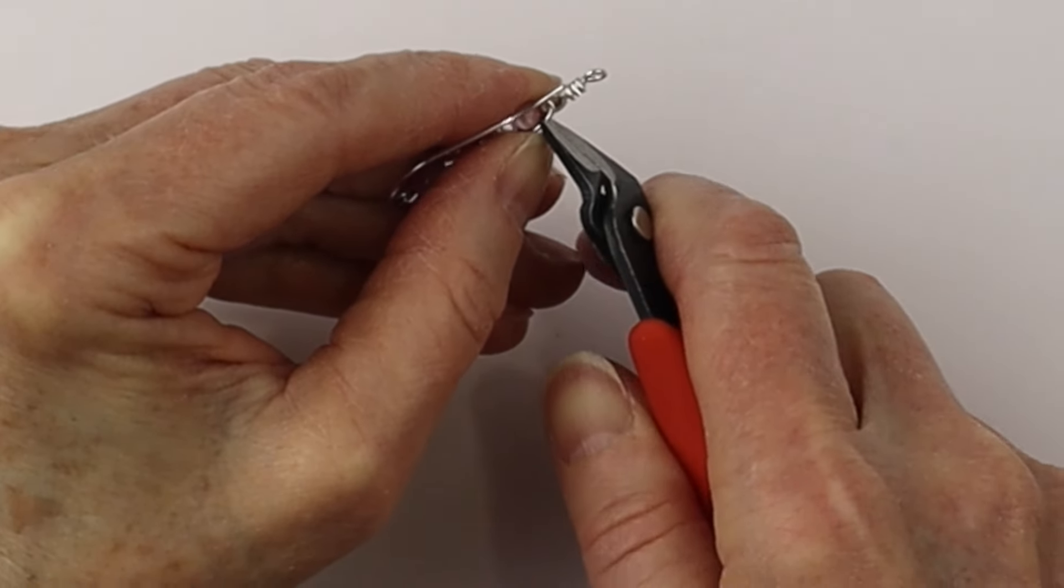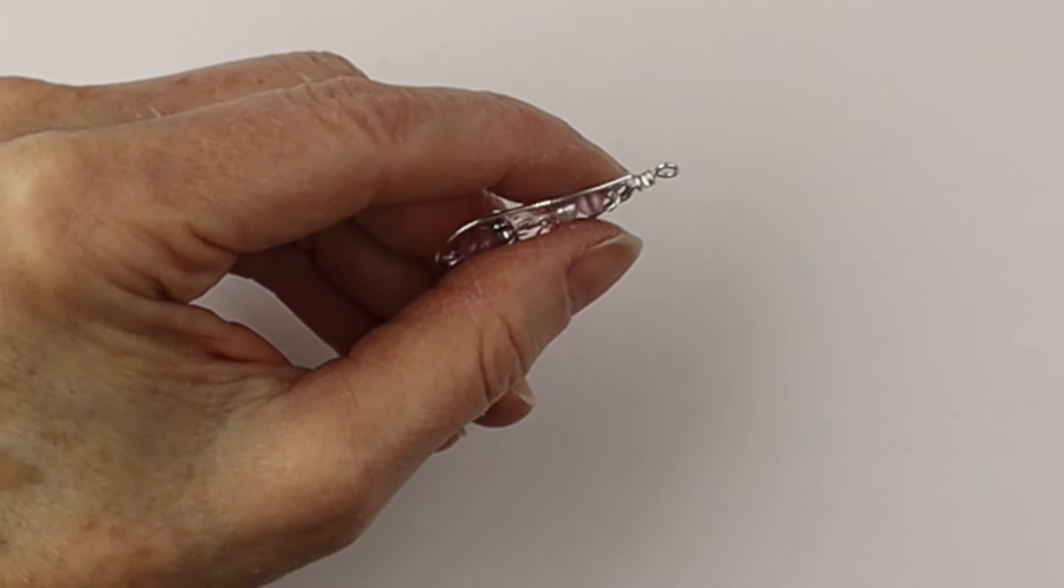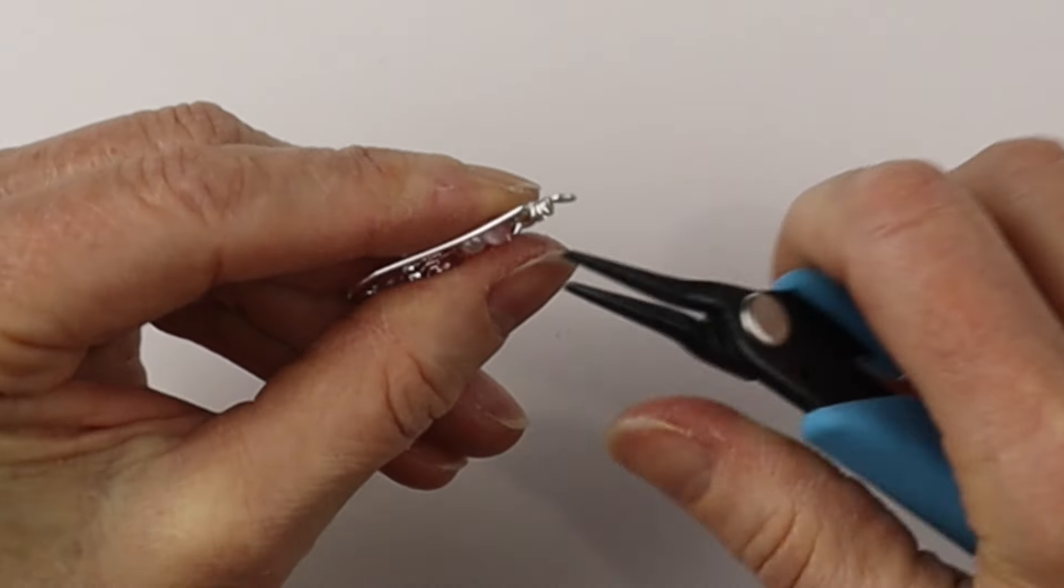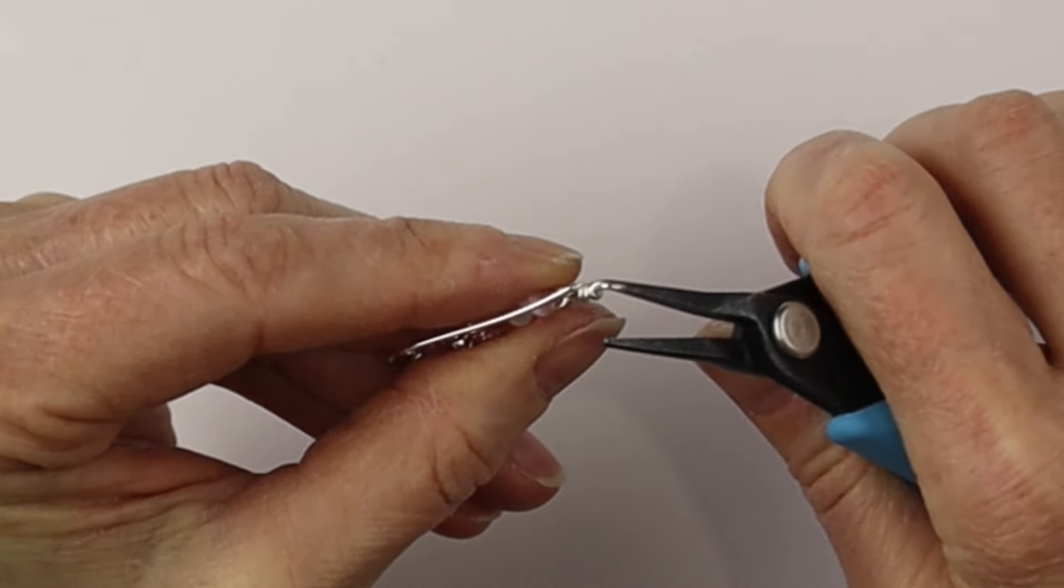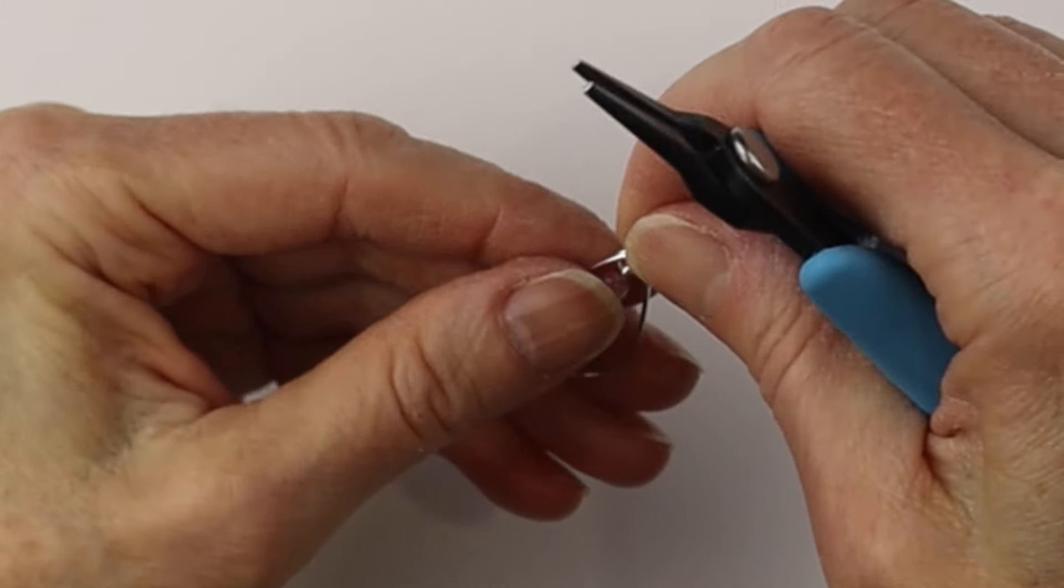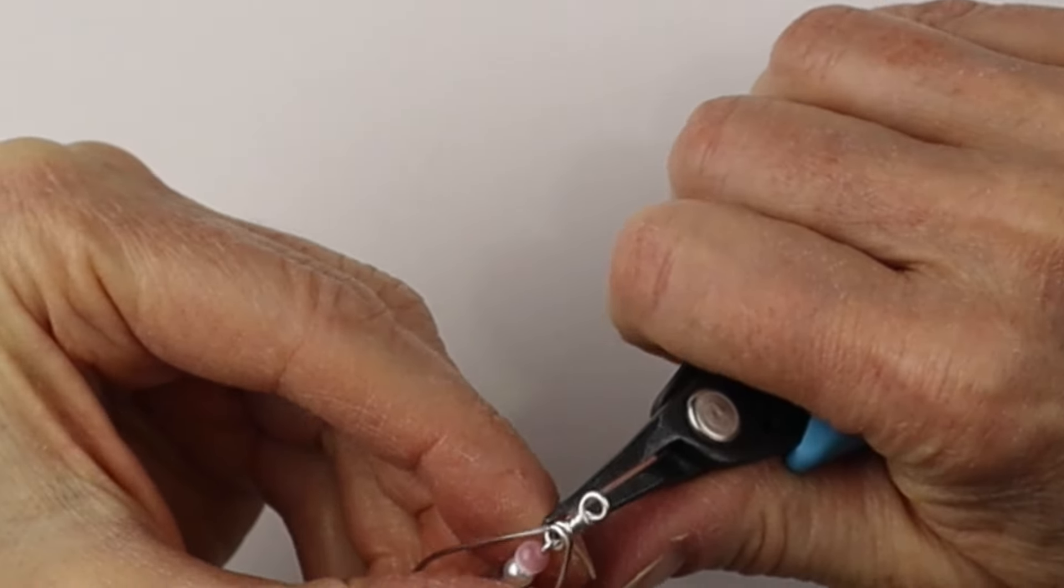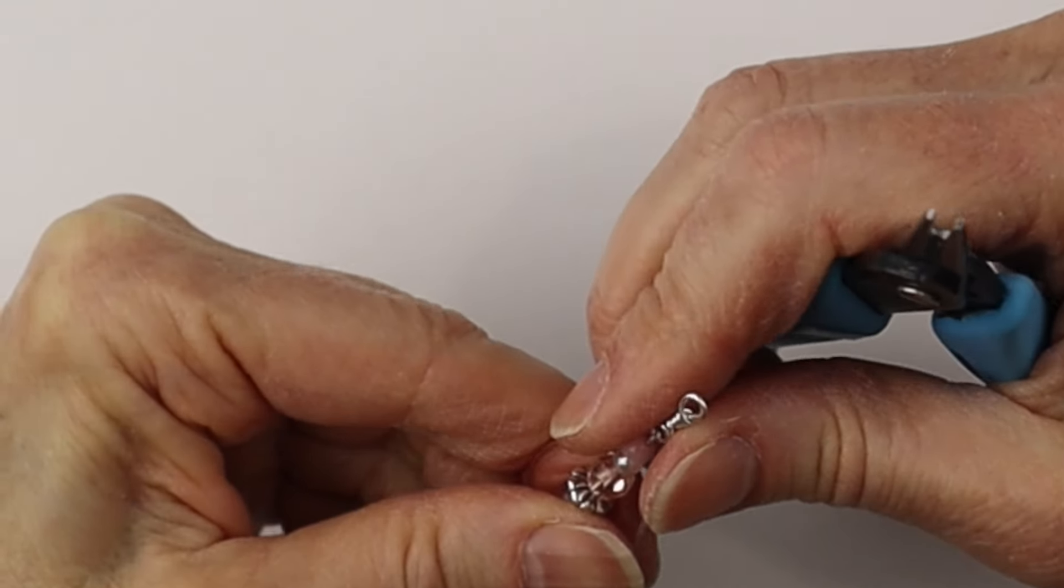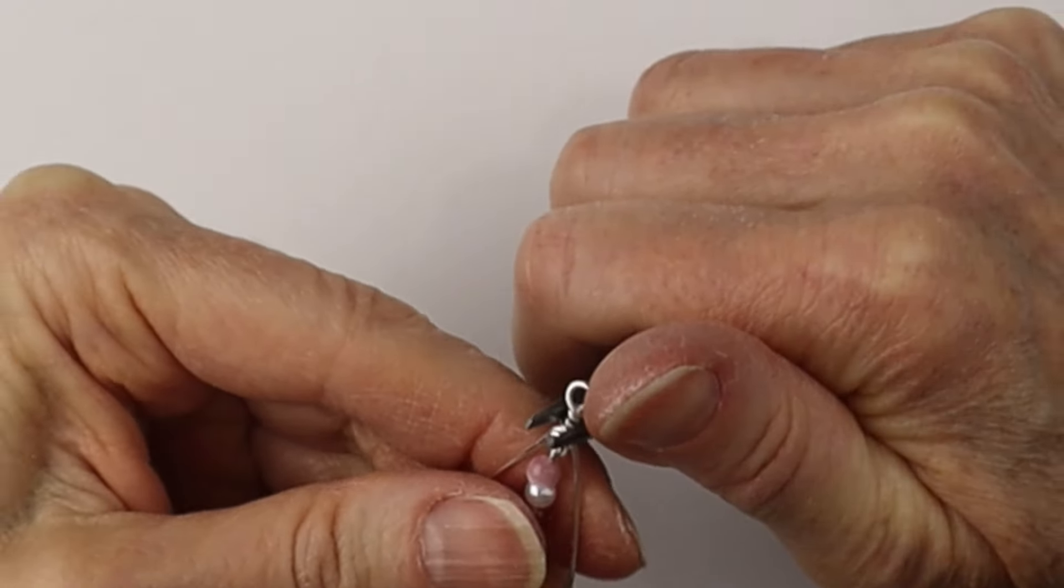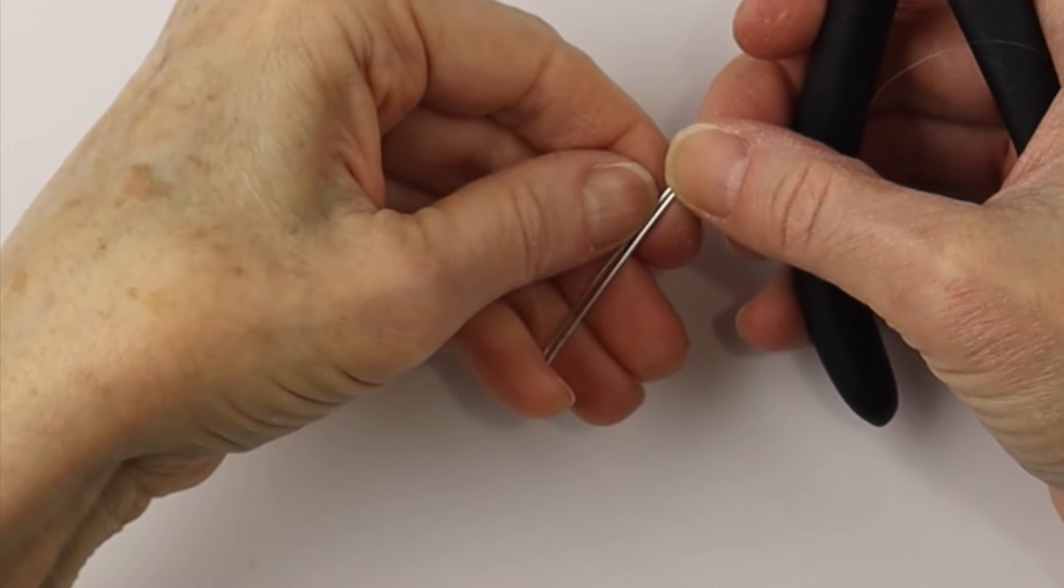Take the tweezer nose pliers to bend that wire down and then clip it flush. These are the micro shear flush cutters from Xuron. The Xuron tools are great quality. Take that end with the tweezers and pinch it in so it's firmly in place. Do any little last minute adjustments that you need to make sure it's straight and even, and there is our piece.